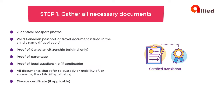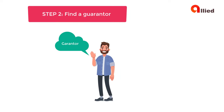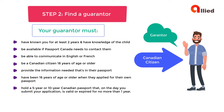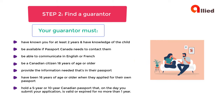Now that we've prepared all required documents, let's go to Step 2: Find a guarantor. When you, the parent or legal guardian, apply for a Canadian passport on behalf of a child, you will need to find a guarantor to sign the application and some of the passport photos. Your guarantor must have known you personally for at least two years and must have knowledge of the child. They must be available if Passport Canada needs to contact them, be able to communicate in English or French, be a Canadian citizen 18 years of age or older, provide the information needed from their passport, and have been 16 years of age or older when they applied for their own passport. They must hold a 5-year or 10-year Canadian passport that, on the day you submit your application, is valid or expired for no more than one year. As long as they meet these requirements, your guarantor can be anyone, including a family member or member of your household.